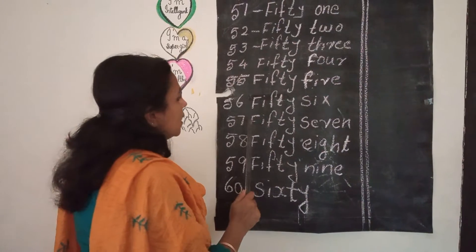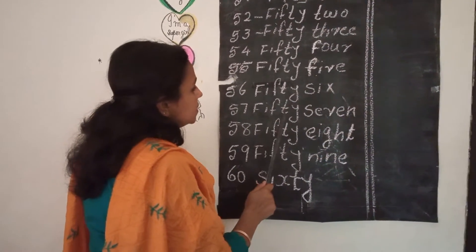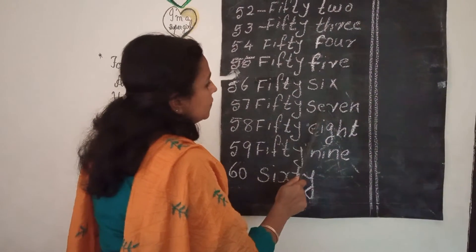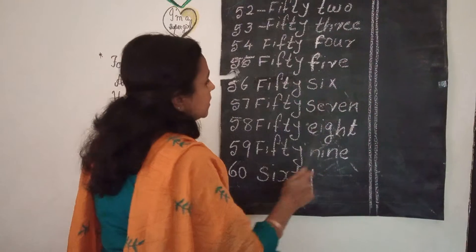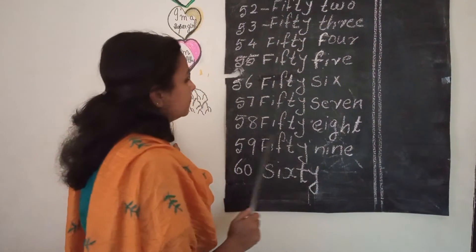57 — spelling: F, I, F, T, Y, S, E, V, E, N. Fifty-seven.